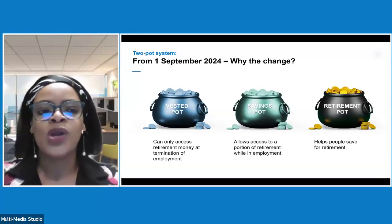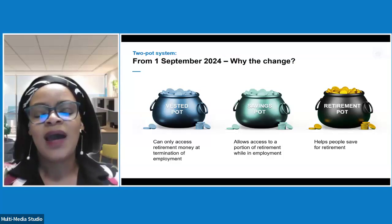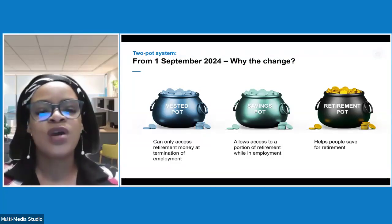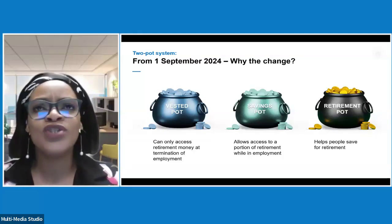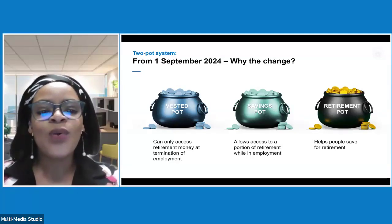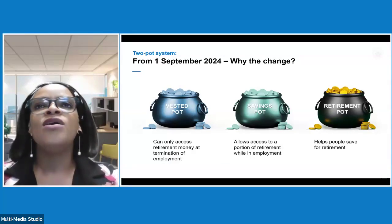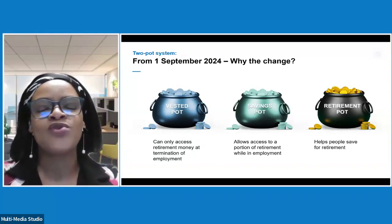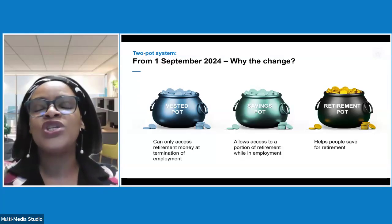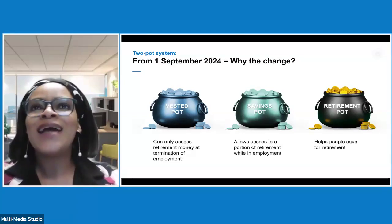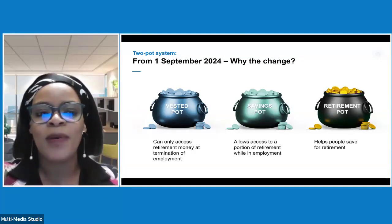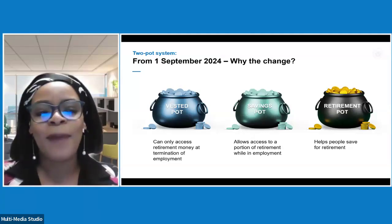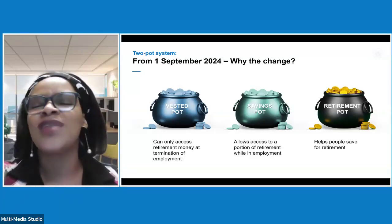When I define 'old money,' I mean monies invested into the retirement arrangement up to 31 August 2024. That old money is what you will see reflected in the vested pot. All contributions up to that date are reflected in the vested pot, and members can only access that retirement money at termination of employment. You may also recall the T-Day legislation of 1 March 2021, which is still applicable in respect of the vested pot, including its non-vested and vested components.